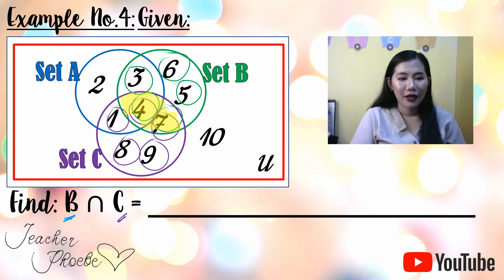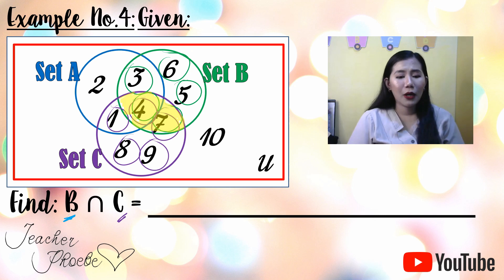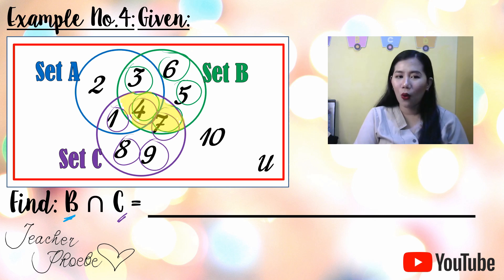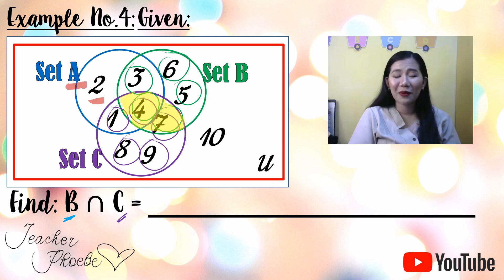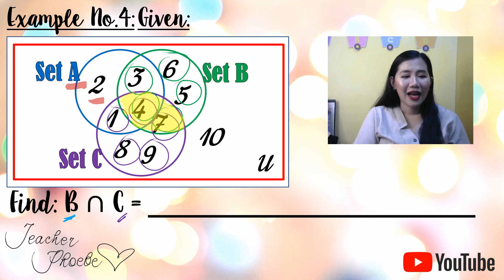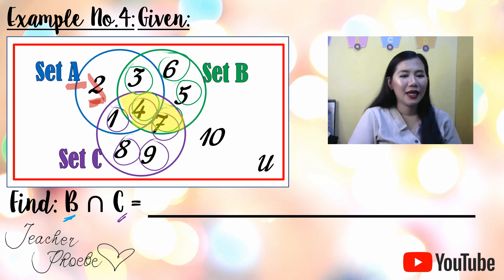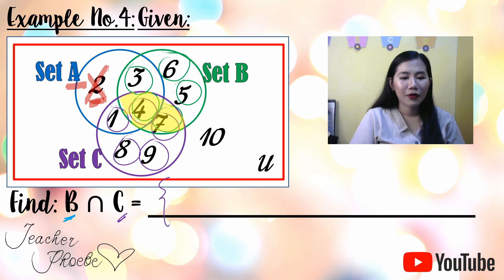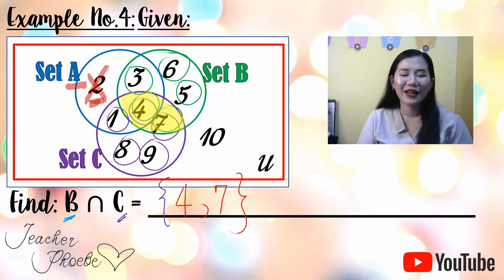The shaded portion shows the intersection of B and C. Regarding the element 2 — it belongs to Set A, and it is not inside the circles of B and C, so it is not included. Therefore, the intersection of B and C is {4, 7}.